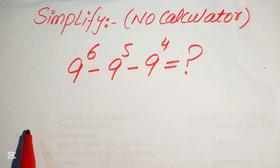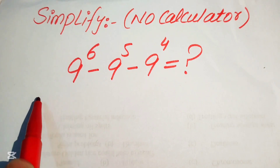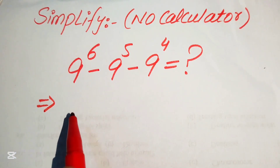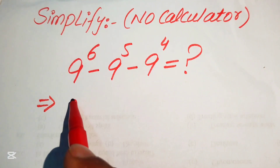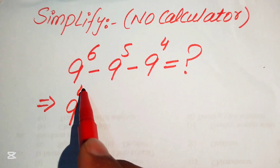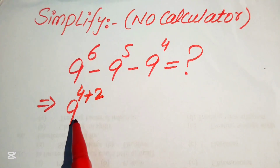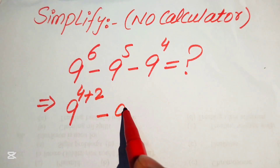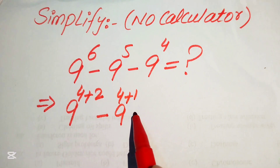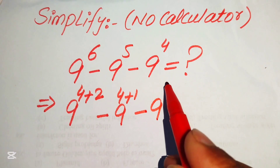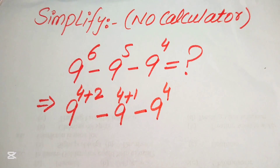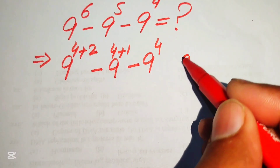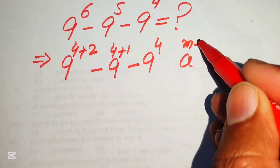The very first step is to rewrite this algebraic expression. We write 9 to the power of 6 as 9 to the power of 4 plus 2, since 4 plus 2 equals 6. Similarly, we write 9 to the power of 5 as 9 to the power of 4 plus 1, and we keep the last term as 9 to the power of 4.